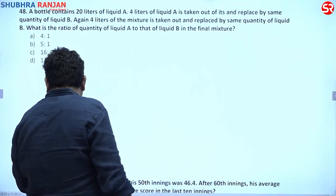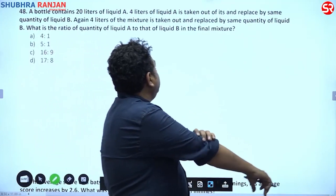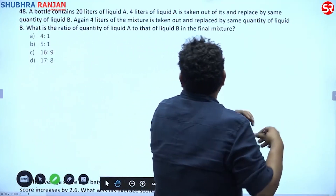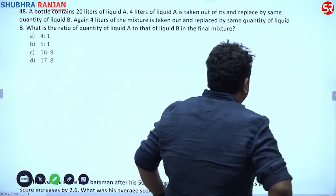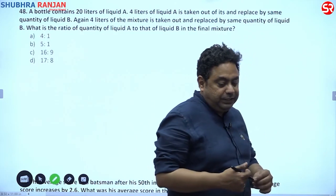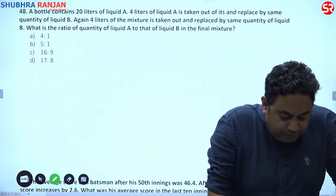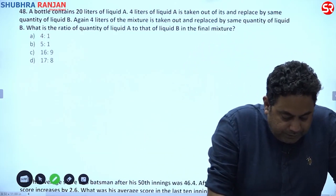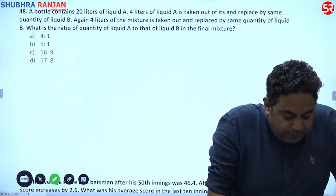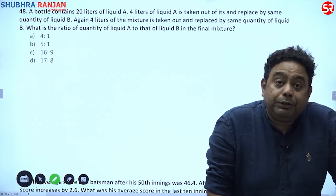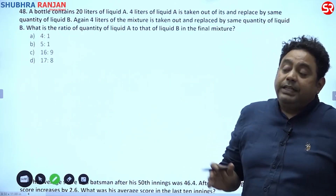A bottle contains 20 liters of milk and 4 liters is taken out and replaced by some quantity of liquid B. Again, 4 liters of the mixture is taken out and replaced by the same quantity of liquid B. What is the ratio of liquid A to liquid B?